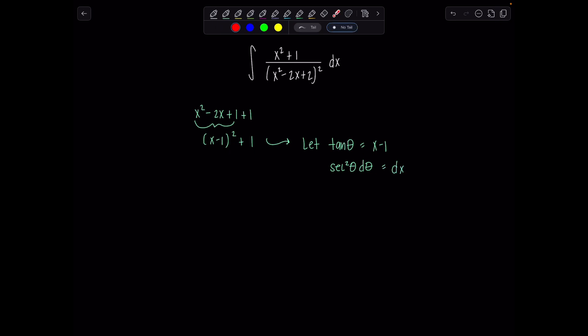So secant squared theta d theta is going to equal 1 dx. Perfect. So now we're pretty much ready to rewrite this entire integral in terms of theta. The only thing that might be tricky for you is we have plain x squared plus 1. So what you have to do is come right here where we made our little trig sub and remind yourself that this means x is equal to tangent theta plus 1.